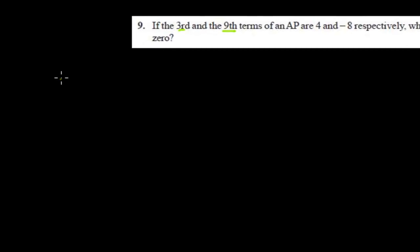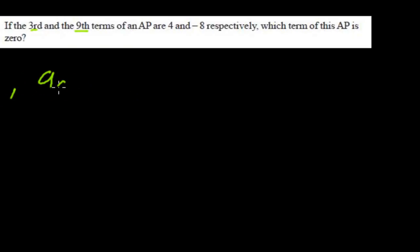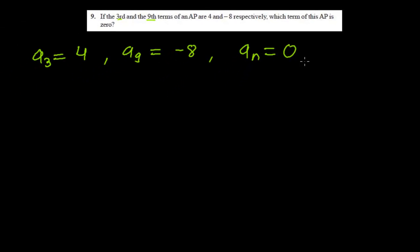So we are given the third term: A3 equals 4. And A9, the 9th term, is also given, that is negative 8. So we have to find out which term equals 0 — which number N we need to find such that AN equals 0.